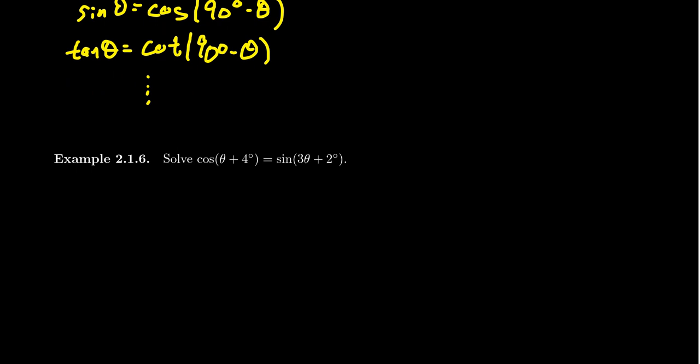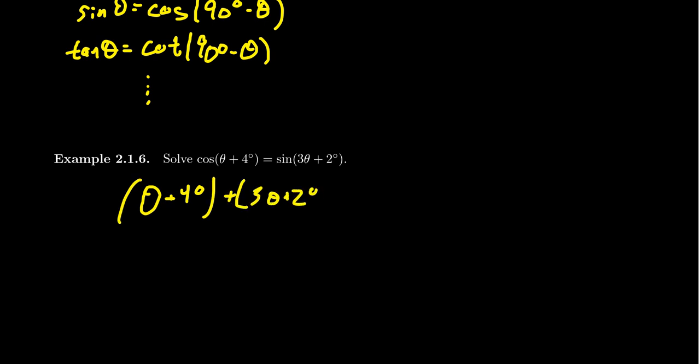Consider this equation to close the video: cosine of (theta + 4 degrees) equals sine of (3 theta + 2 degrees). Let's solve this equation. I want to warn you that I won't give all solutions here, as there is more going on when solving trigonometric equations — a topic we'll tackle in more detail later. But to demonstrate the cofunction theorem: since cosine and sine are complementary functions, if their angles are complementary, that gives us a solution. So we set (theta + 4) + (3 theta + 2) equal to 90 degrees.